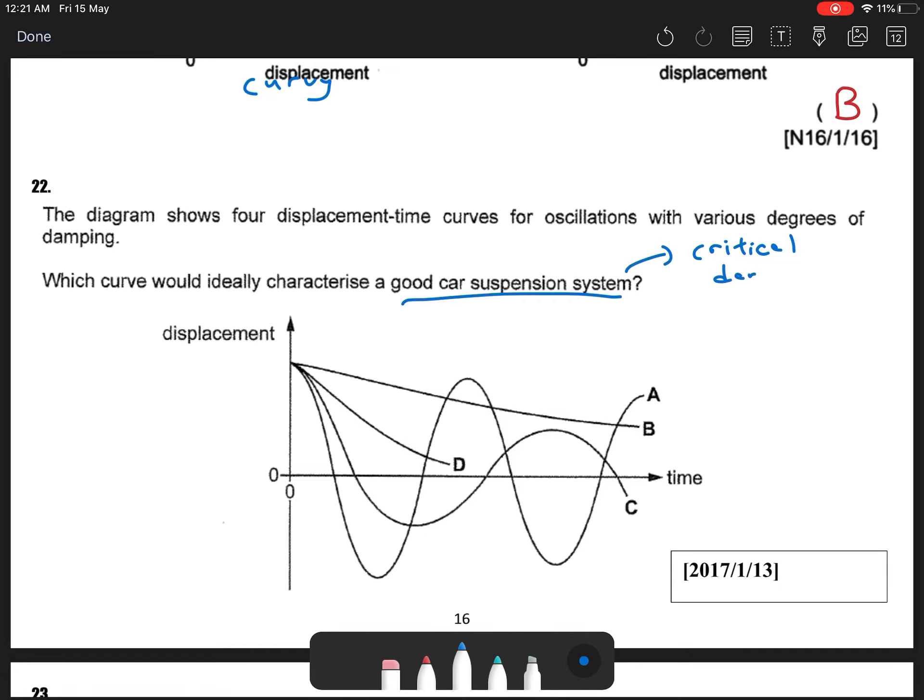So what I want to see is my critical damping. So your answer is D, D for Dammer.